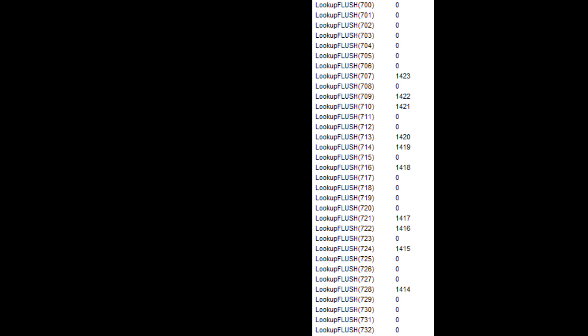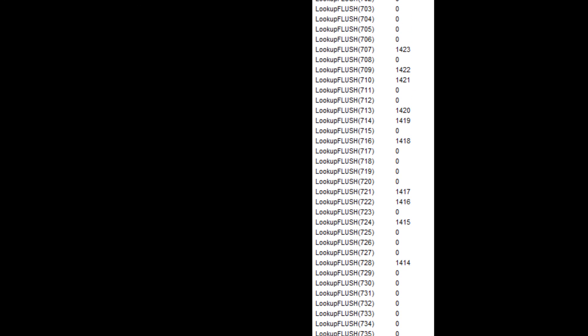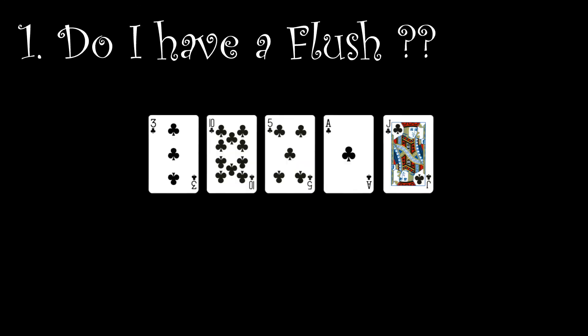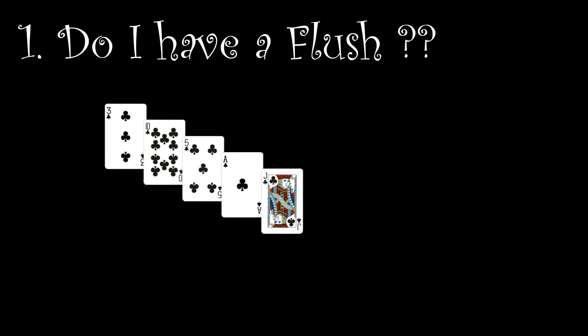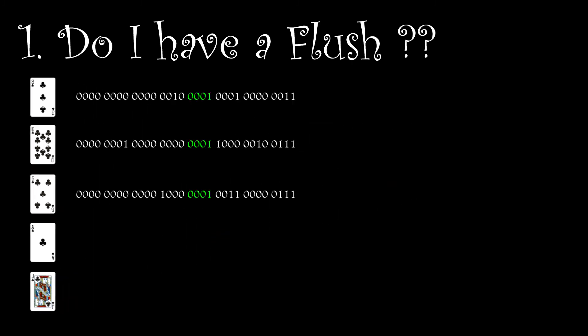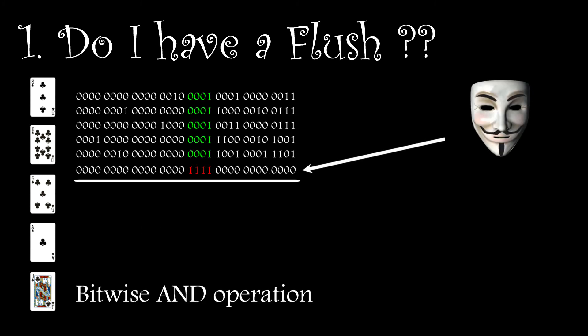Well that brings us back to question number one. Do I have a flush? Look at the example here. Clearly it's a flush but how do I check it based on what we've done so far? The first thing to do is look at the bit patterns for the cards and apply a bit mask to them using a bitwise AND operation.